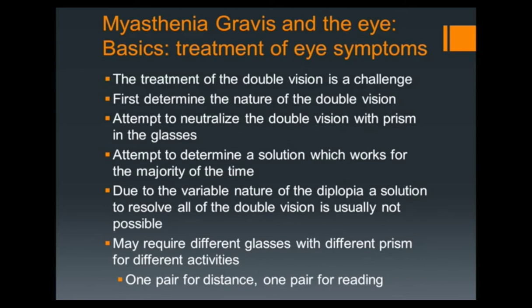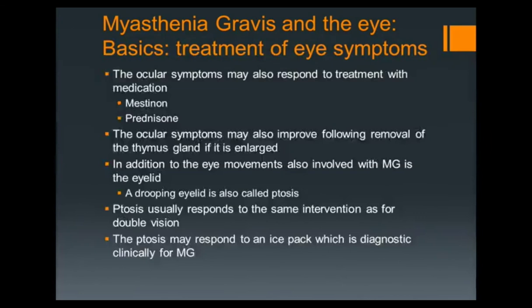First we want to determine the nature of the double vision, attempt to neutralize it with prism in the glasses, and attempt to determine a solution which works for the majority of the time. When we use prisms in glasses, I tell patients we apply the Abraham Lincoln rule: you'll never make all the people happy all the time — you're never going to have a solution that works all the time. I have patients with myasthenia who have several pairs of glasses: one for distance, one for reading. One patient has glasses for morning and glasses for evening, because the evening glasses have more prism. The variable nature makes it very difficult to treat.